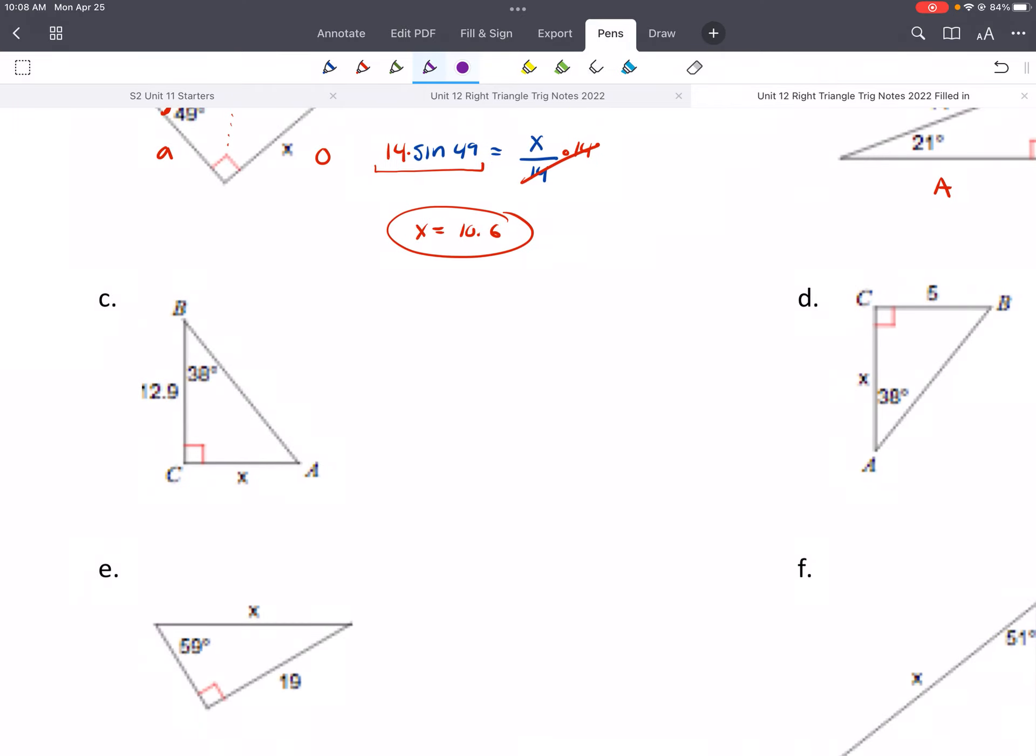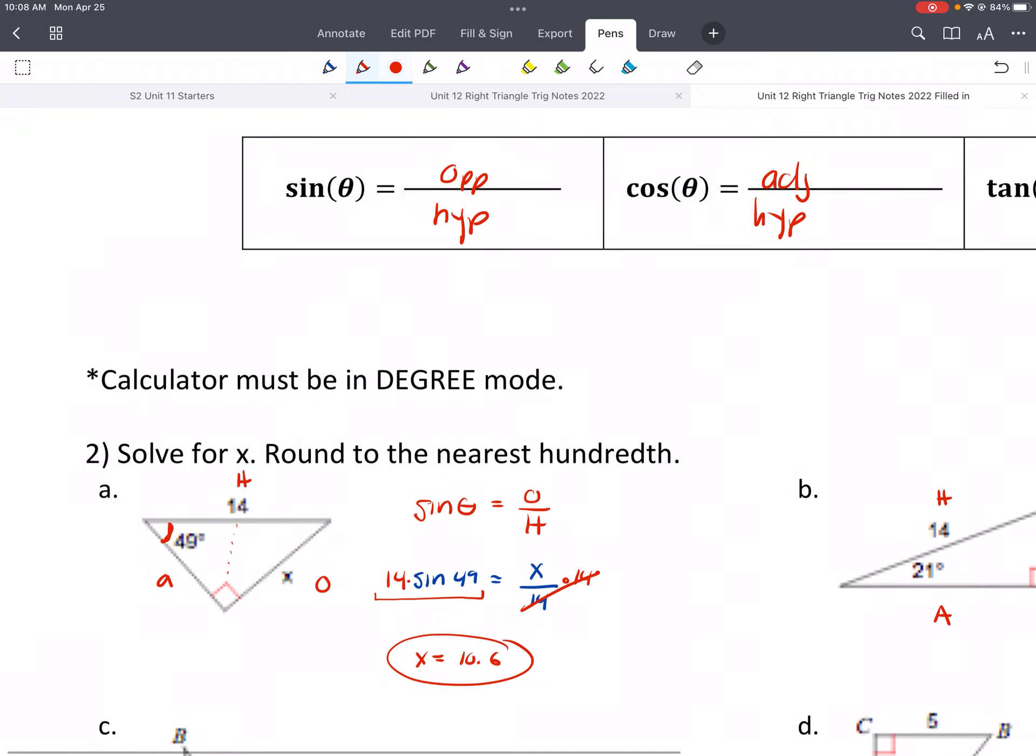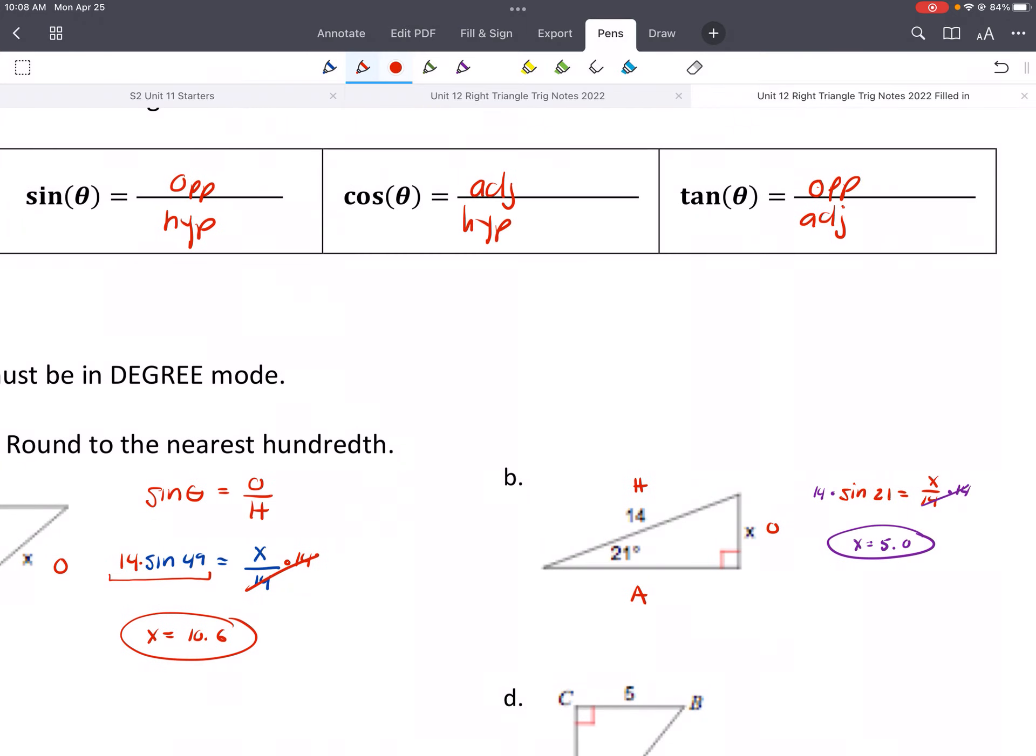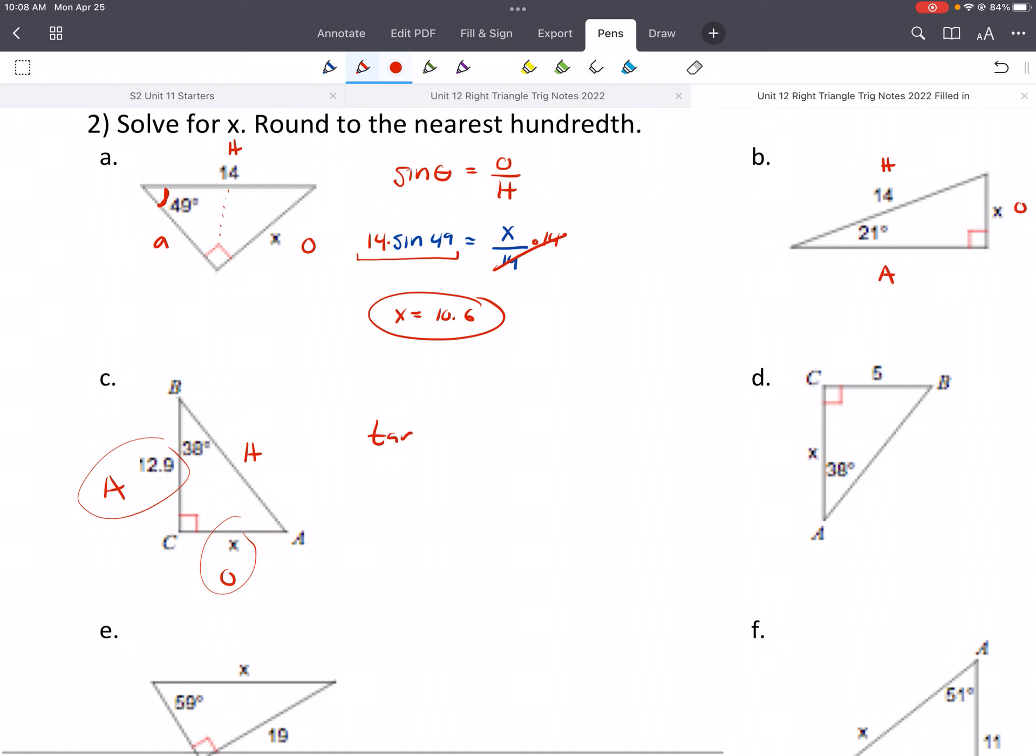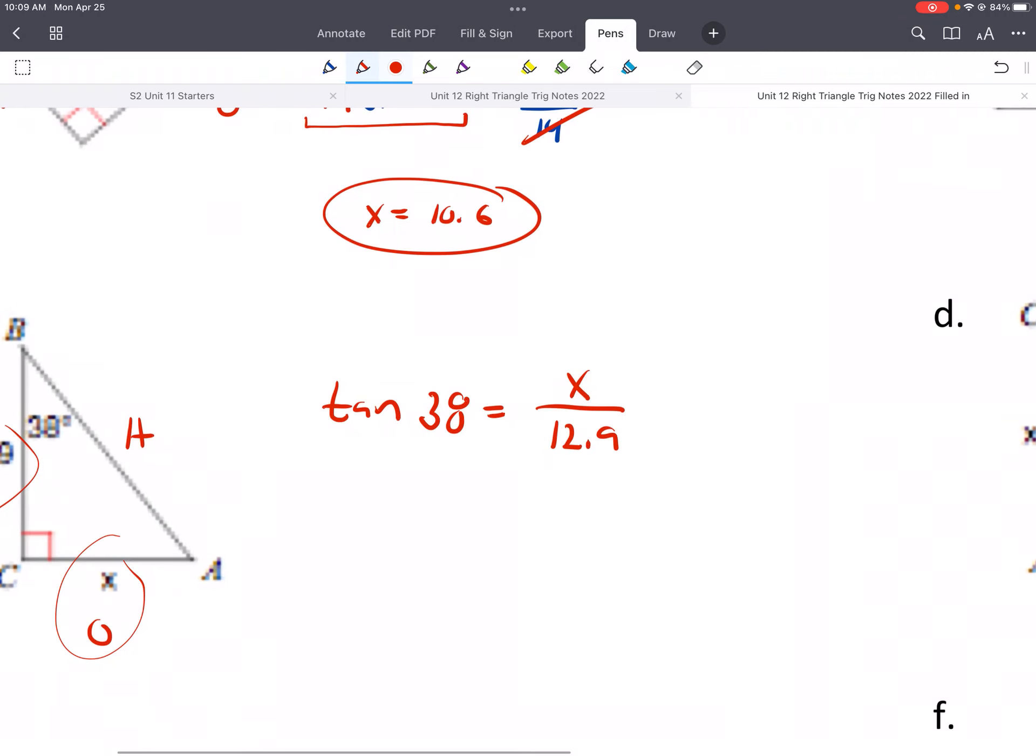All right, so let's try C and D. So maybe they'll use different trig functions here. So here we have our reference angle, HOA. What uses A and O? Well, we could look up here. O and A. The only one that uses that is tangent. So we would have tangent of 38 equals O over A.